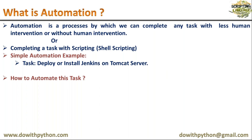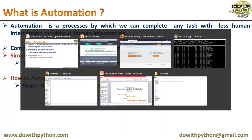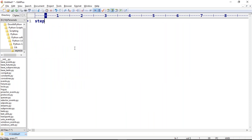To automate any task you need to follow some steps. The very first step is to get all manual steps — what commands are required to perform the task manually. For our task, the first manual step is: you need Java. So check if Java is present on your host; if not, install it using the yum command.